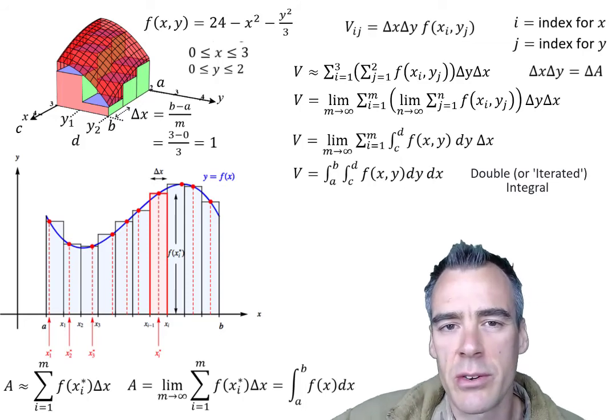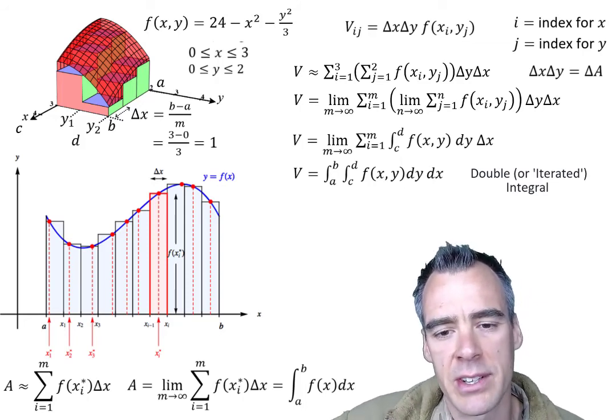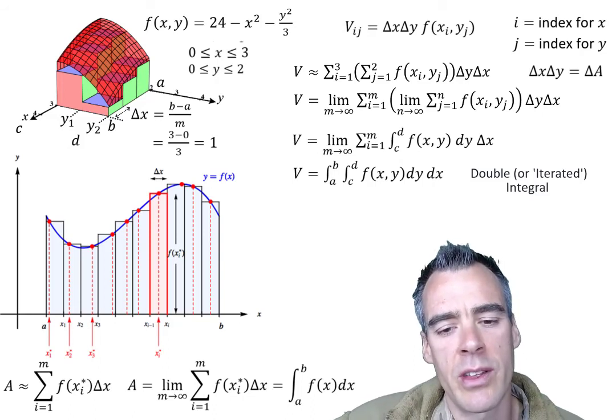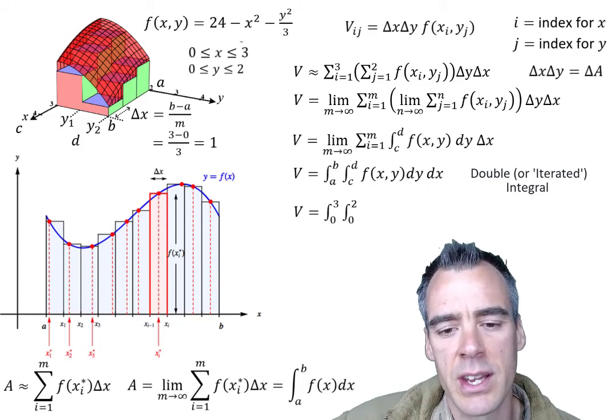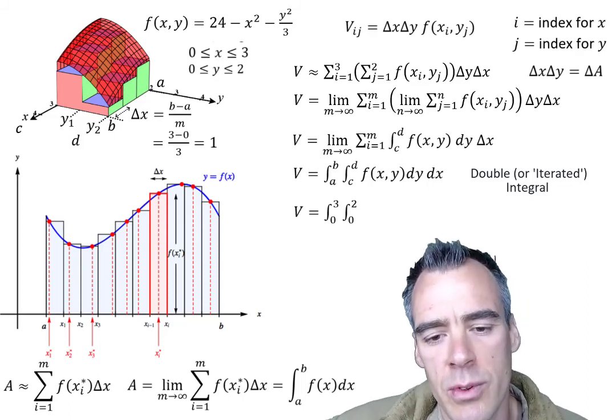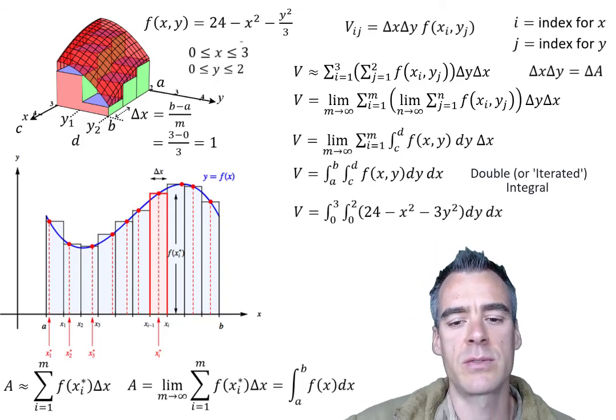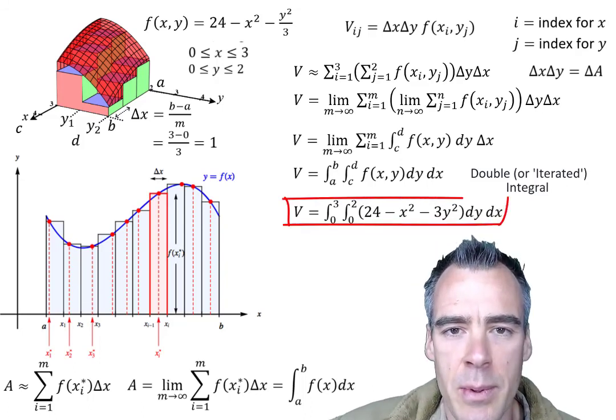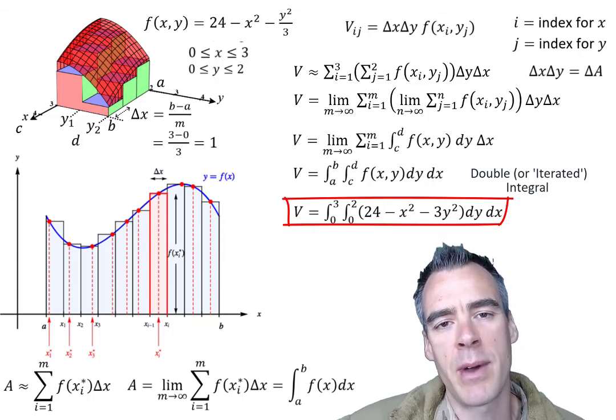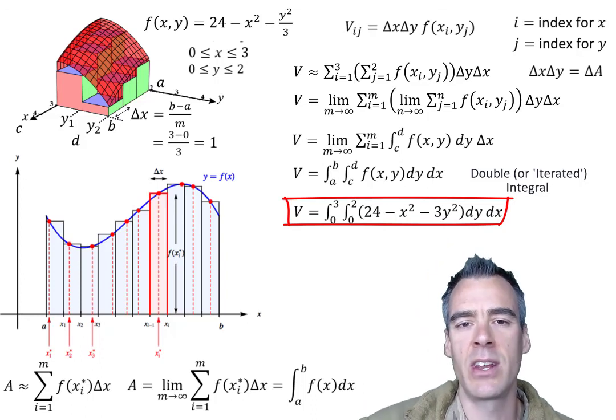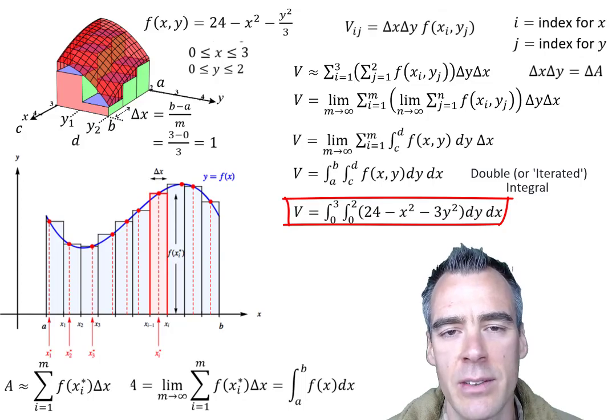And this is basically the general form of one. But if we wanted to go ahead and plug in those values that we had for our particular case, we recall that our c and d, y limits were 0 and 2. And our a and b, x limits were 0 and 3. And our function with respect to x and y was 24 minus x squared minus 3y squared. So this would be our final integral setup. And we'll go ahead and evaluate this by hand. Look at it again in CalcPlot 3D and evaluate it by MATLAB in the next video. So stay tuned as we go ahead and wrap this up in a nice little bow.